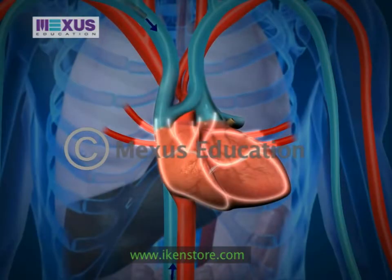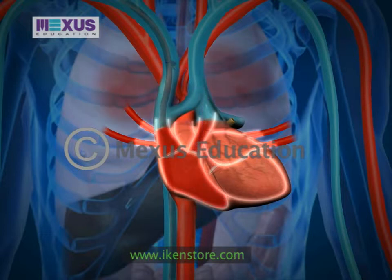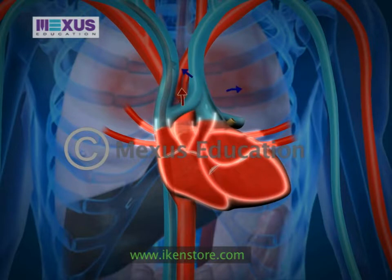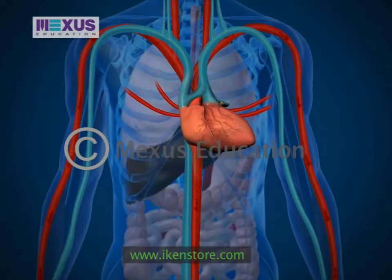After entering the heart, the deoxygenated blood is then pumped through the lungs, where it is loaded back up with oxygen, and the cycle is repeated. If you could see what your heart looks like when it beats, it would look like this.